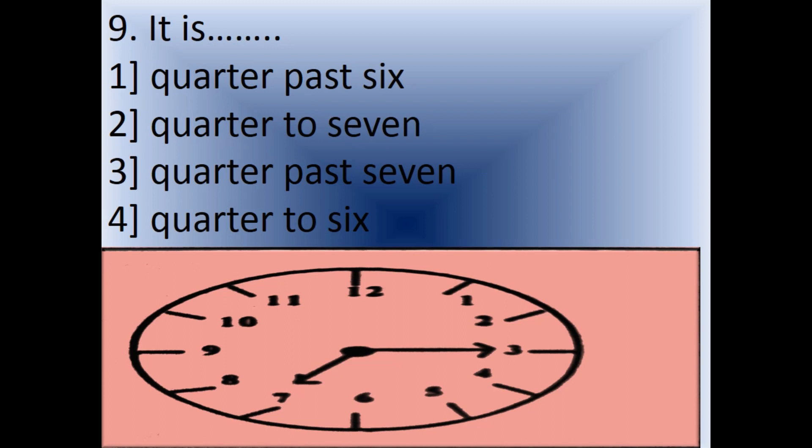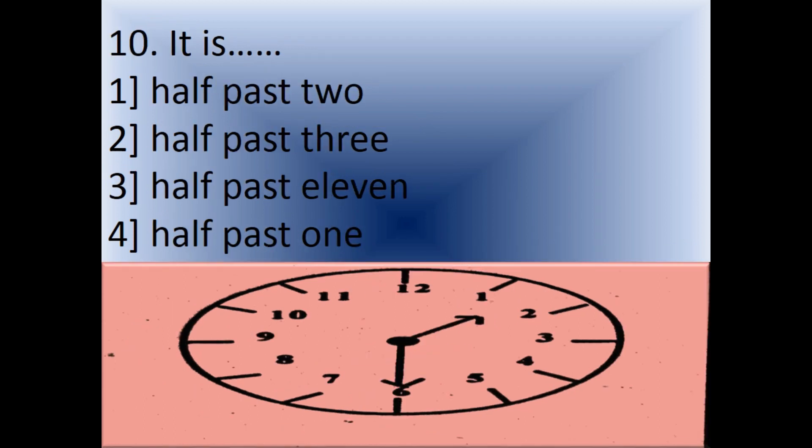Question 9: It is dash. Options: 1) Quarter past 6, 2) Quarter to 7, 3) Quarter past 7, 4) Quarter to 6. Look at the watch. It's 7 o'clock and 15 minutes, which means quarter past 7. Option number 3, quarter past 7.